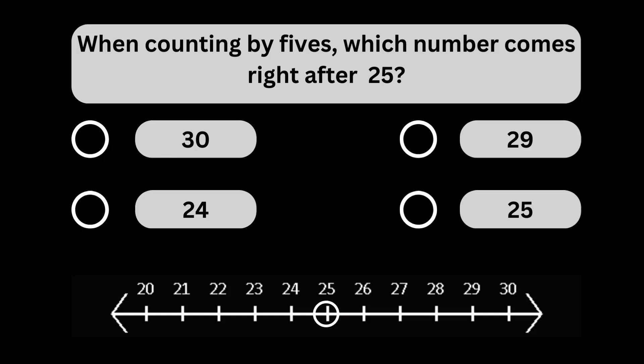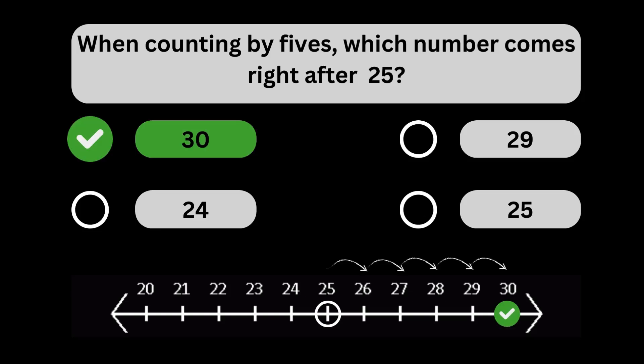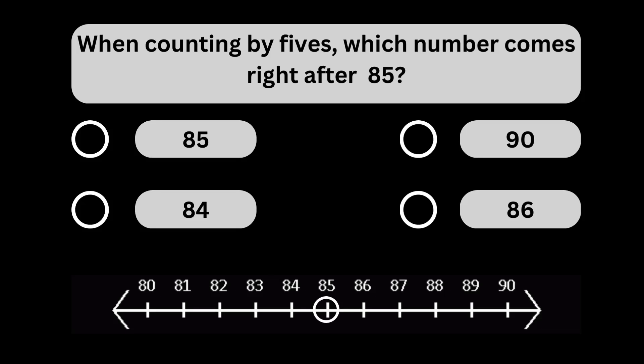When counting by fives, which number comes right after 85? When counting by fives, the number 90 comes right after 85.